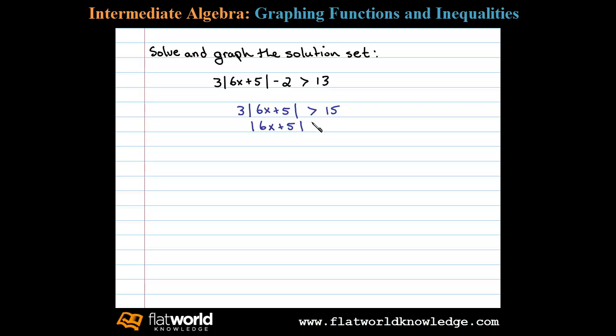This leaves us with an absolute value greater than some number, and so we can write 6x plus 5 has to be less than negative 5, or 6x plus 5 can be greater than positive 5. This gives us two inequalities that we can solve.